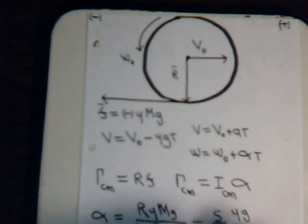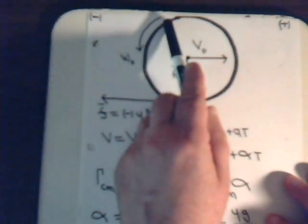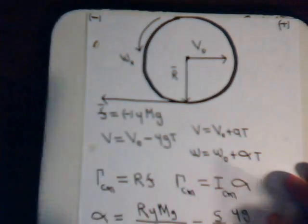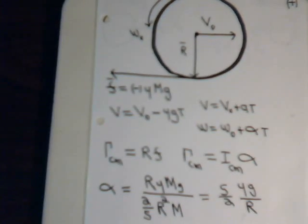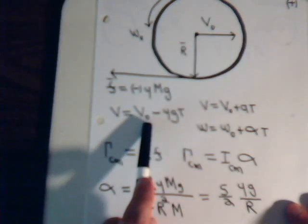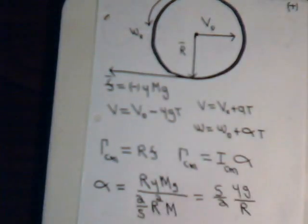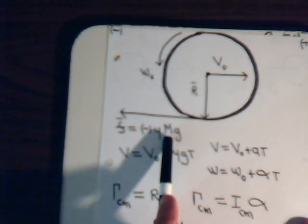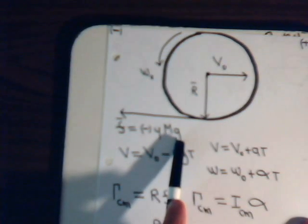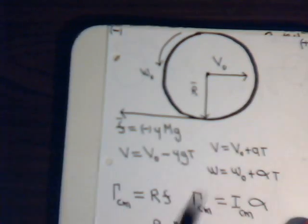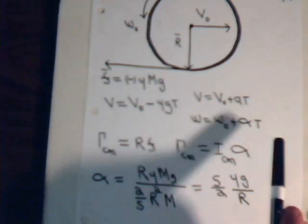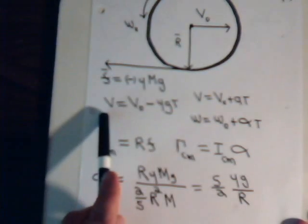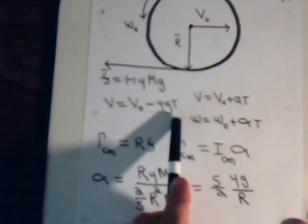Here is our ball with linear velocity in the positive direction and angular velocity in the opposite sense. As it skids across the surface there is a frictional force. The velocity at any time, as seen in previous videos, is V-naught minus mu·G·t. The frictional force points in the negative direction, so there is a minus sign; it is the coefficient of friction times the mass of the ball times gravitational acceleration, 9.8 m/s². This is the equation for the linear velocity of the ball at any time.